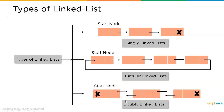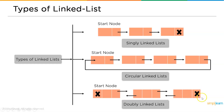In a doubly linked list, each node has two address locations. The first node has null as its first address, then the element, and the second address points to the next node. In subsequent nodes, the first address points to the previous node and the second address points to the next node. At the end, the second address is null, indicating the end of the list.